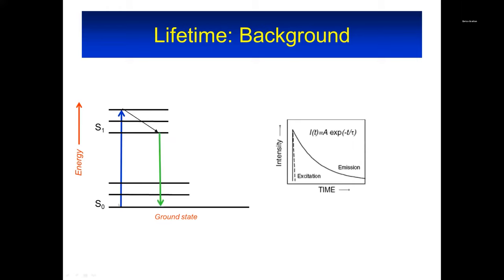You excite the molecule from a ground electronic state to an excited electronic state. Every one of those lines represents a vibration, and this is about a picosecond per vibration. So after two or three picoseconds, you get to that point and then you get the fluorescence — and this is the signal that we mentioned.